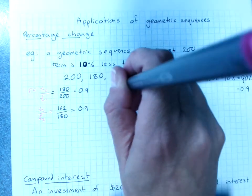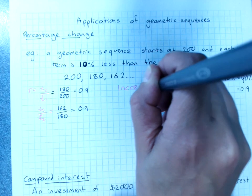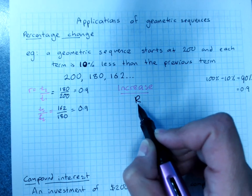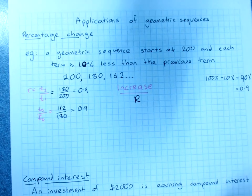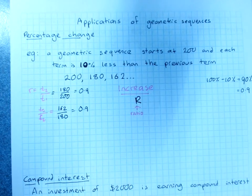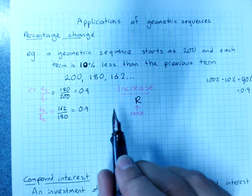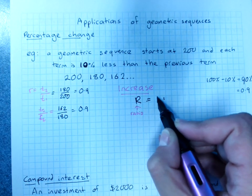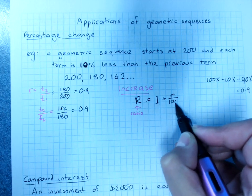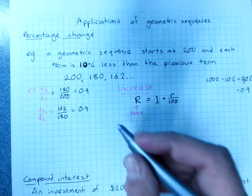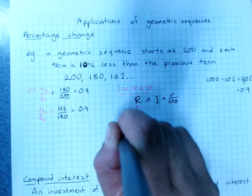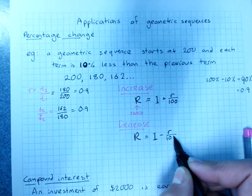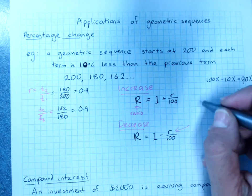So for increase, we'll use capital R to mean the multiplying factor. That is the common ratio. We used to use little r. We use capital R now because little r is the percentage change. Percentage increase is 1 plus the percentage change over 100 to get it to a decimal. Decrease, the common ratio is 1 minus the percentage change over 100. So I'm just going to put a label for little r, percentage change.